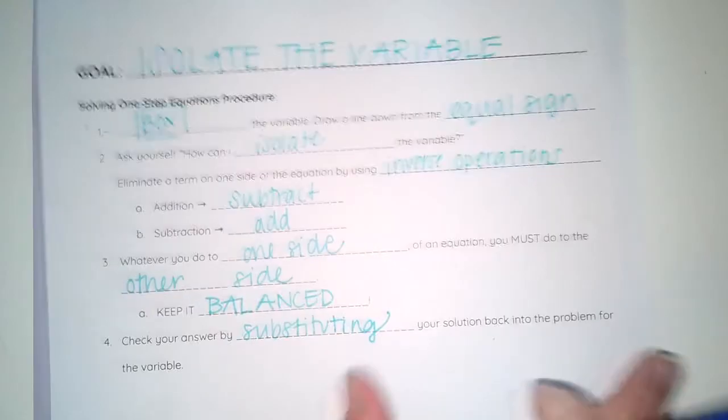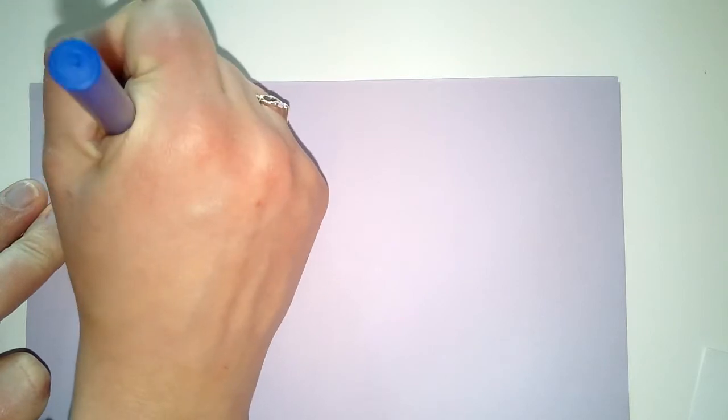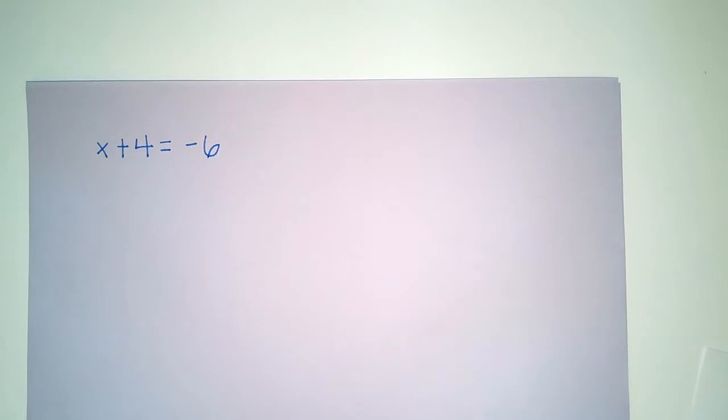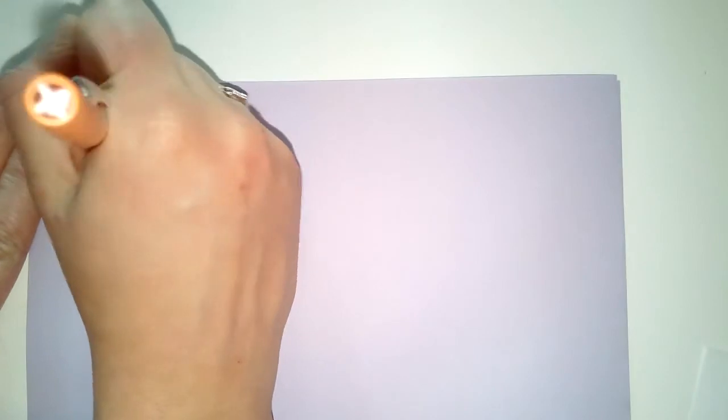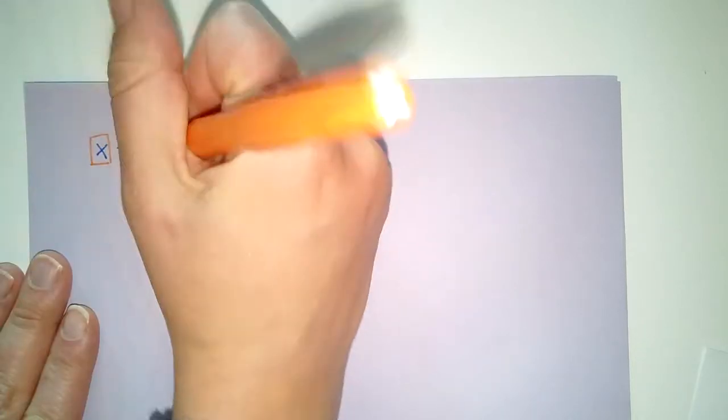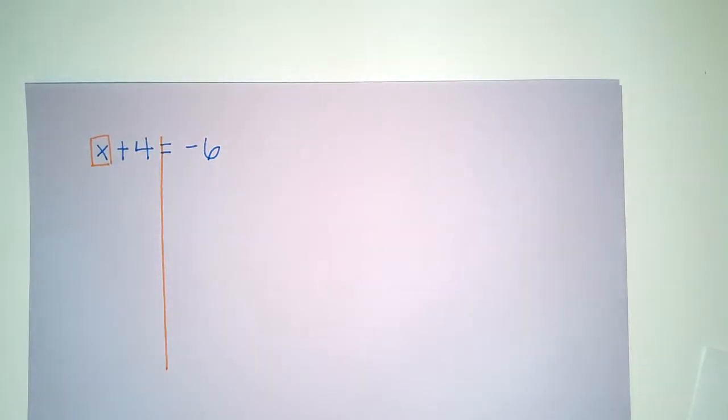So let's go ahead and try a couple of examples. Let's start here. x+4=-6. So my very first step is to box my variable. I will box my x. That is not going to move. I draw my line down from my equal sign showing me balance. Whatever I do on this side, I must do on this side.